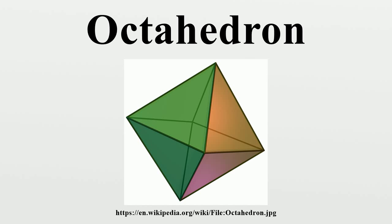Regular octahedron dimensions: if the edge length of a regular octahedron is a, the radius of a circumscribed sphere and the radius of an inscribed sphere, while the mid-radius, which touches the middle of each edge, are related by specific formulas. The octahedron has four special orthogonal projections.